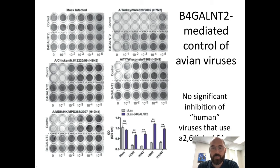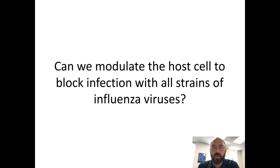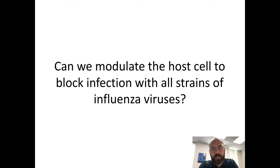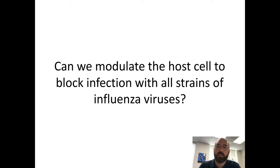When we repeat this analysis with human viruses that prefer alpha-2,6-linked sialic acid, we don't see any significant inhibition. So we're only part of the way there. Avian viruses cause severe disease in people when exposed — highly pathogenic avian influenza viruses — so B4GALNT2 is potentially a host factor we could target to restrict those viruses. But we really want host targets that would block infection in a strain-independent manner.